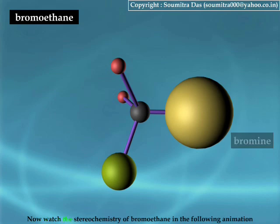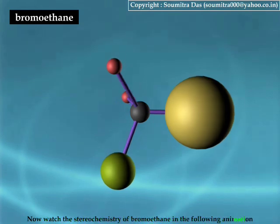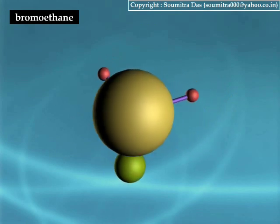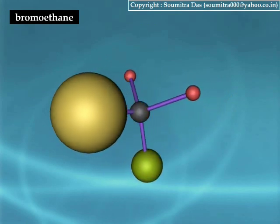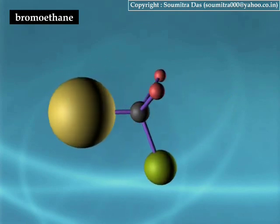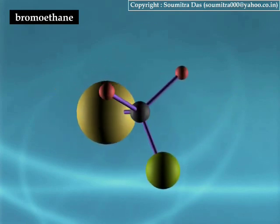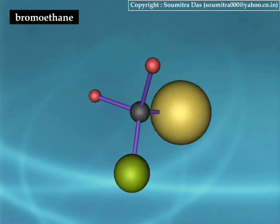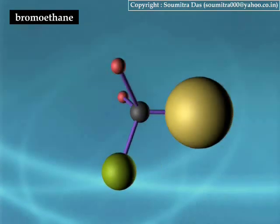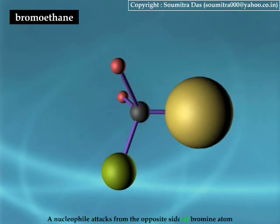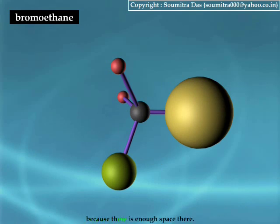Now watch the stereochemistry of bromoethane in the following animation. A nucleophile attacks from the opposite side of the bromine atom because there is enough space there.